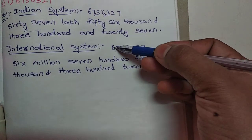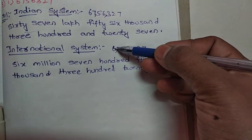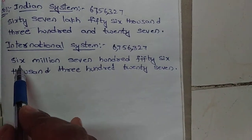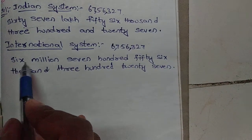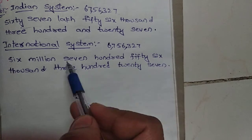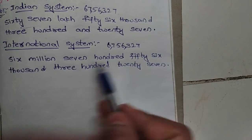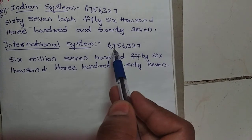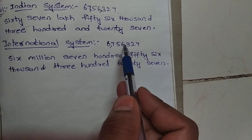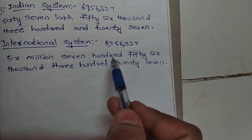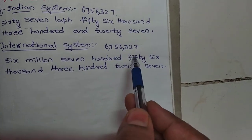The place values are: units, tens, hundreds, thousands, ten thousands, hundred thousands, then millions. So the number name in the International system is: six million, seven hundred and fifty-six thousand, three hundred and twenty-seven.